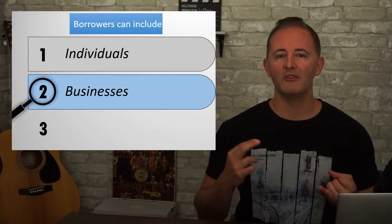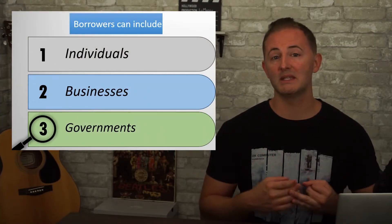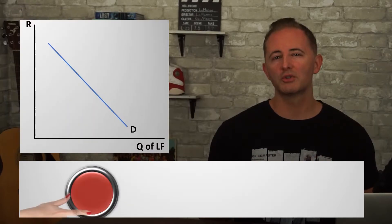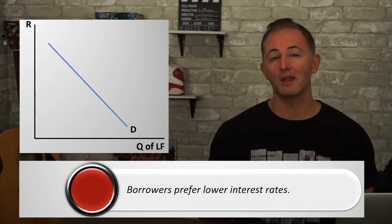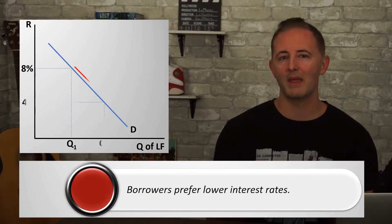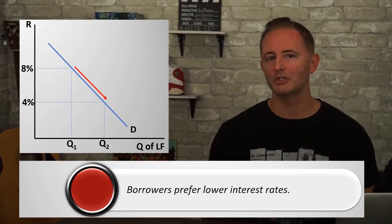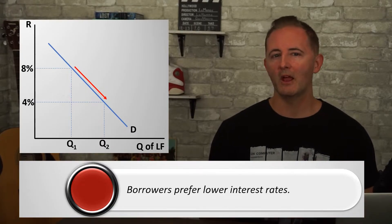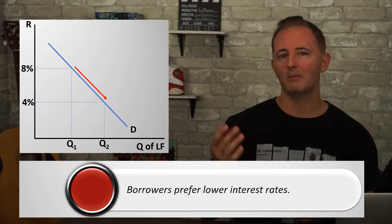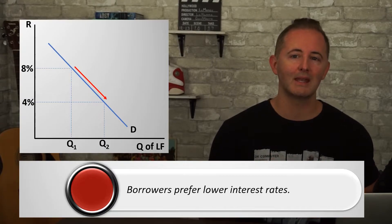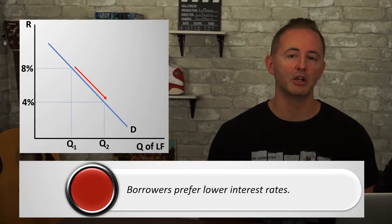The demand curve is much simpler — it just represents borrowers. Borrowers can be individuals, businesses, or governments in need of loanable funds. All borrowers are included in this market. Not surprisingly, borrowers like to pay less to borrow money, so they prefer lower real interest rates. Therefore, the quantity demanded of loanable funds is greater at lower interest rates than at higher interest rates.